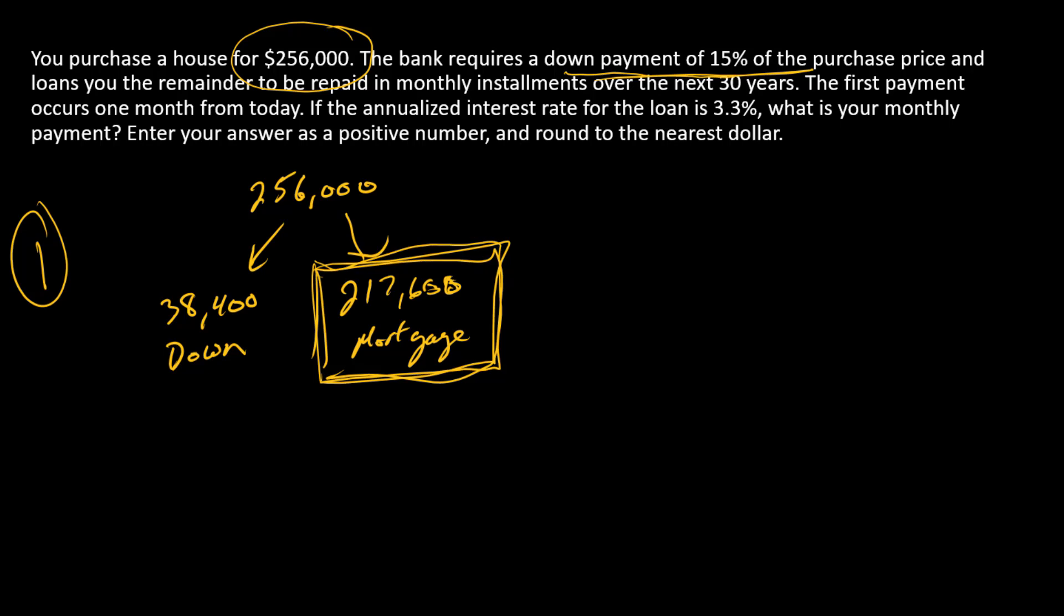Now let's go to step two. In step two, let's draw a timeline for the repayment stream. Since we have monthly payments over 30 years, we're going to have 12 times 30, or 360 payments. You don't know what the payment is, so I'm going to write PMT here.